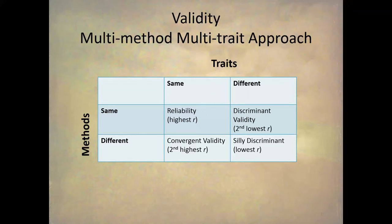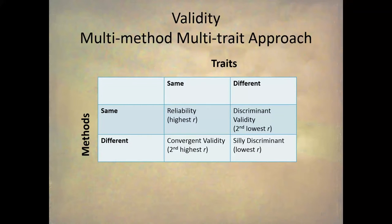Then what we do is use different methods — the PAQ and the BEM Sex Role Inventory — and correlate together people's scores on the same trait, that is masculinity. This should have the highest correlation, and we call that convergent validity. If we find discriminant validity (a low correlation) and convergent validity (a high correlation), then we say this is a valid test.